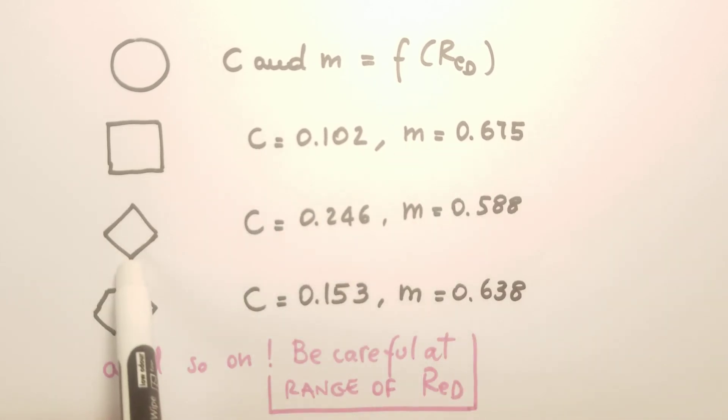And then also a square but rotated by 90 degrees, and so on. You can find different correlations for different geometries. What you have to be careful is that different correlations are valid for different ranges of the Reynolds number.